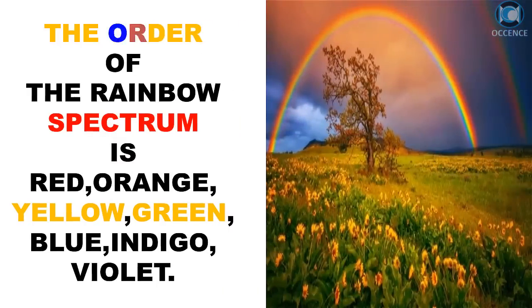The order of the rainbow spectrum is red, orange, yellow, green, blue, indigo, and violet.